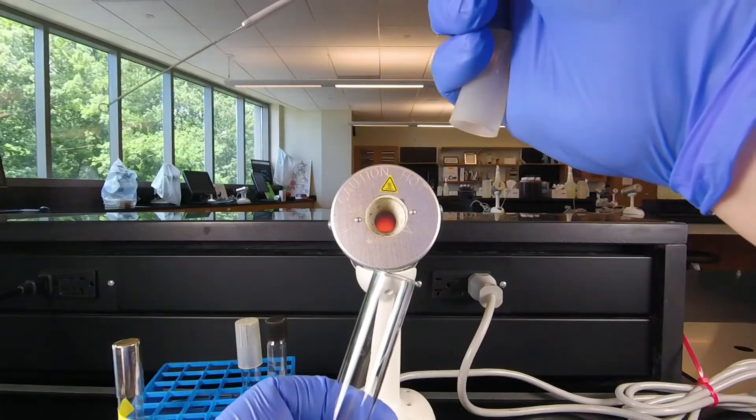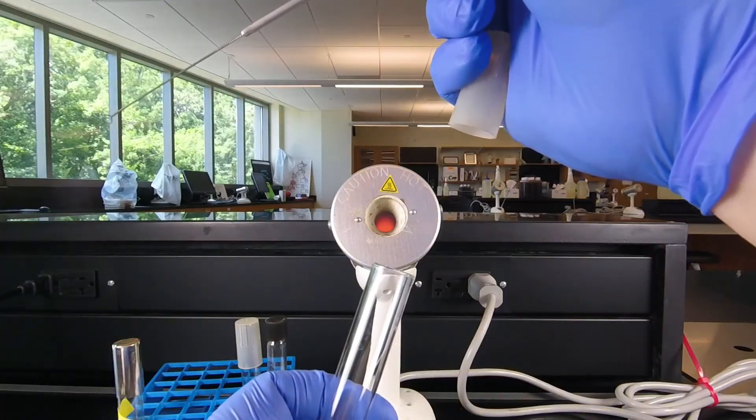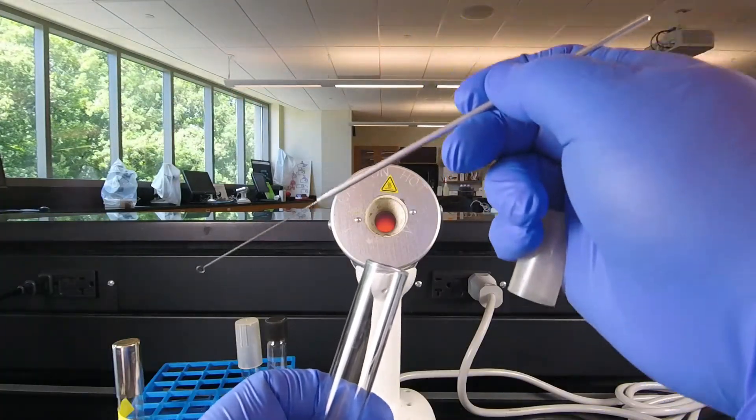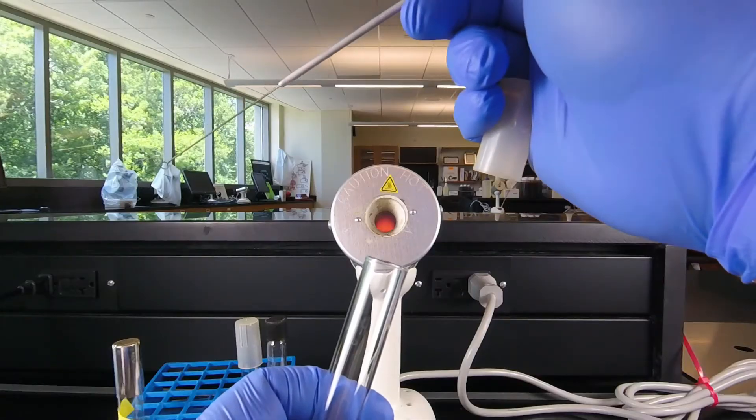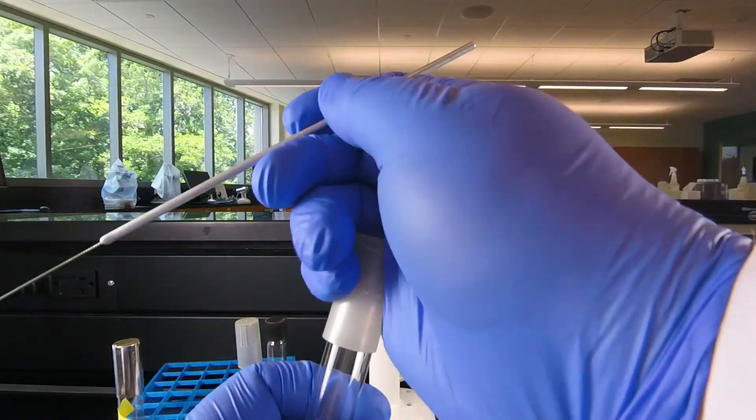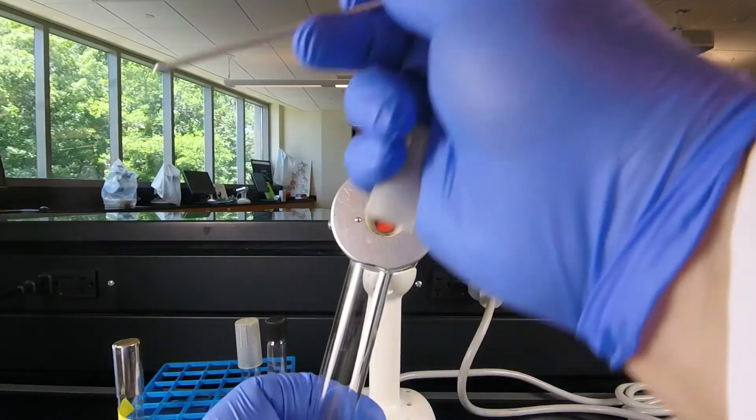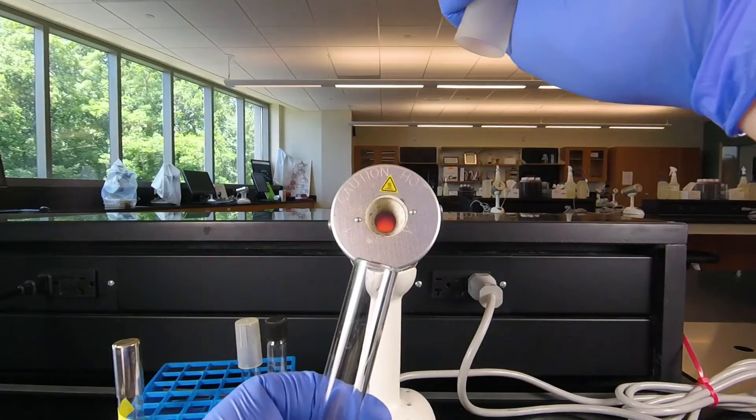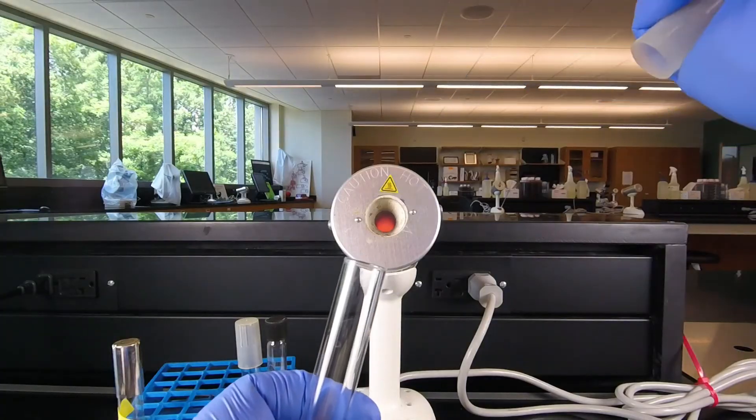Now this keeps the cap facing downward so airborne microbes can't fall in. We never set the cap down because that can contaminate it and leave the tube exposed for a longer period of time. So we simply grab the cap with the little finger of the loop hand, pull it off and it's out of the way and we can easily put our loop in.